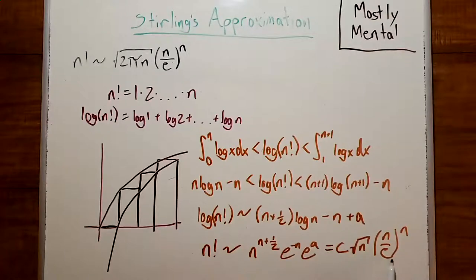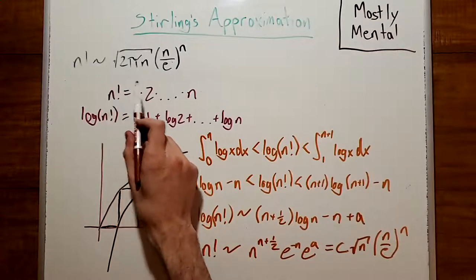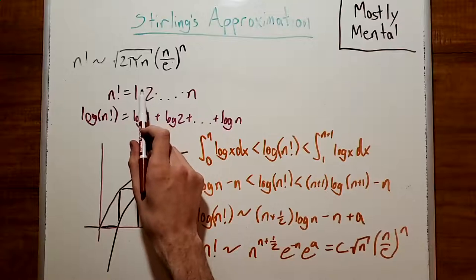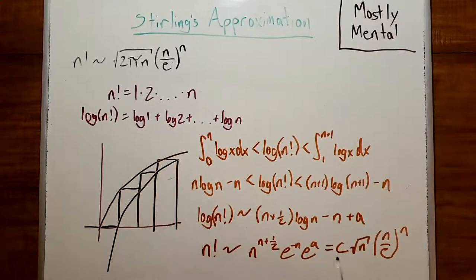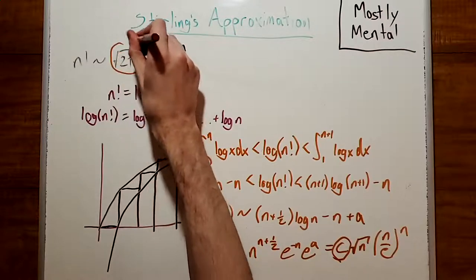Well, that looks an awful lot like Sterling's formula, which is still up here. All that's left to do is to prove that this constant here is the square root of 2 pi.